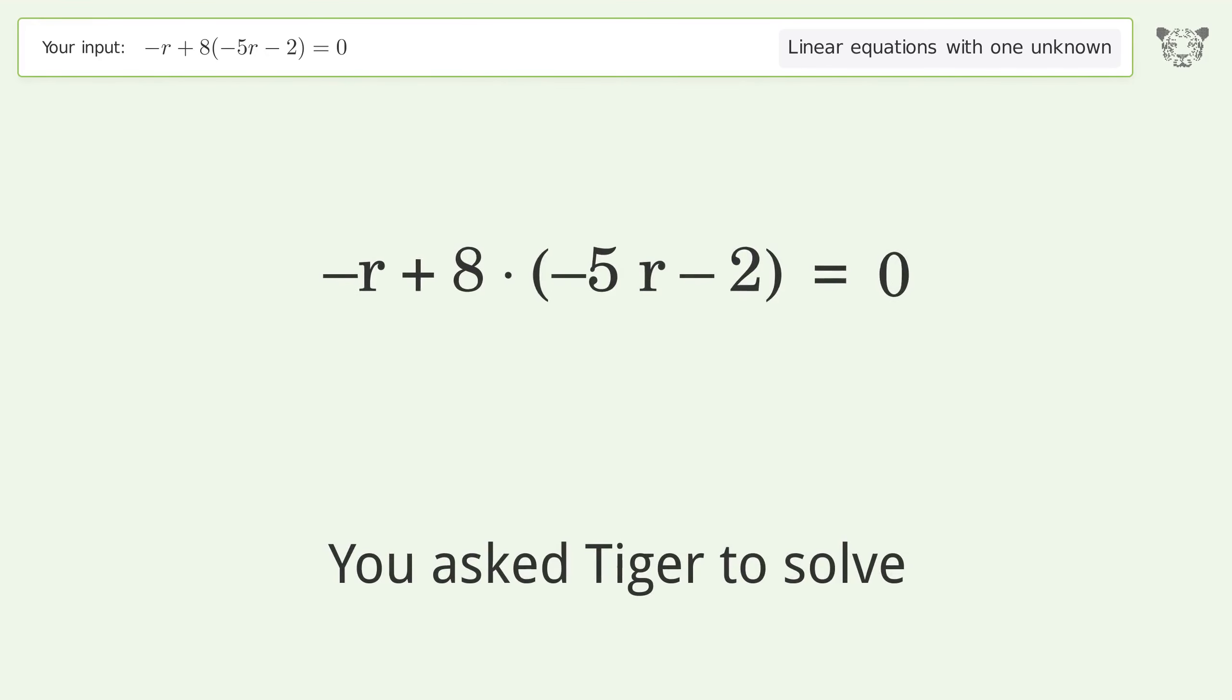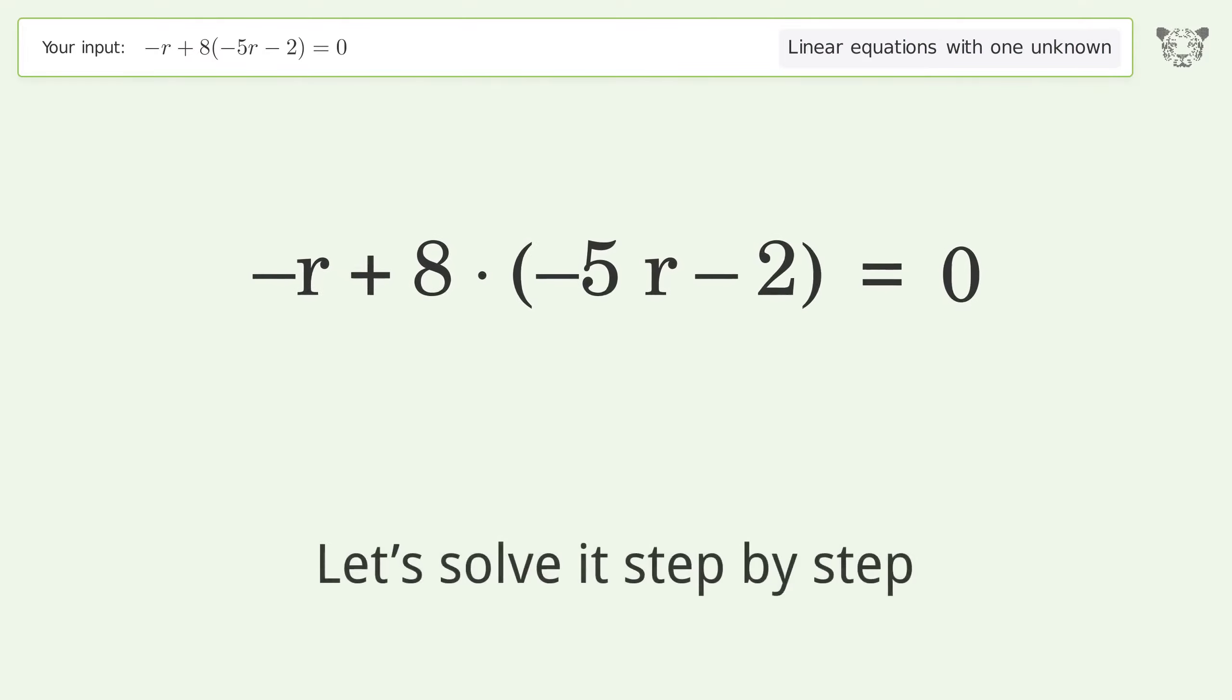You asked Tiger to solve this. It deals with linear equations with one unknown. The final result is r equals negative 16 over 41. Let's solve it step by step.